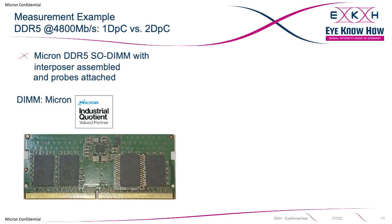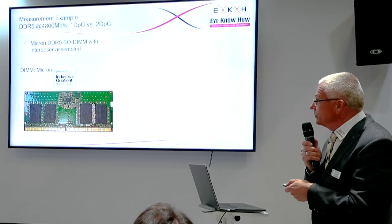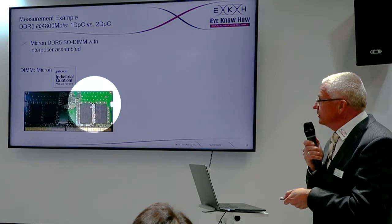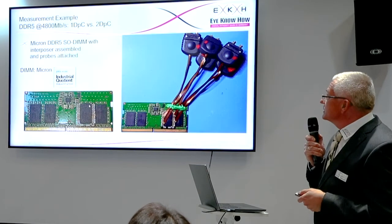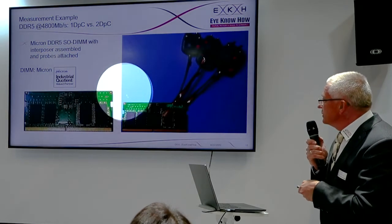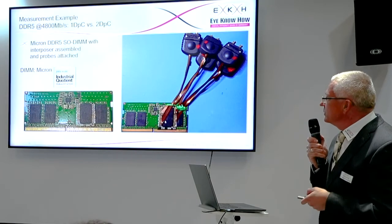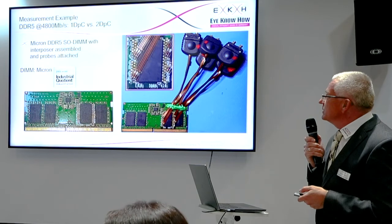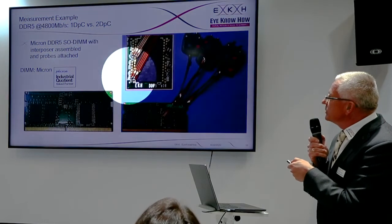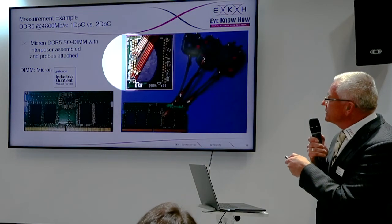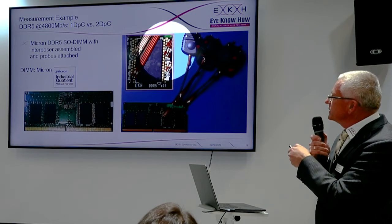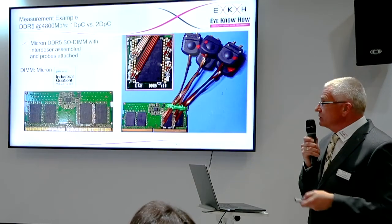To show that this is not just simulation artifacts, here are actual measurements. In this case we have a Micron DIMM with an interposer mounted on it. You can see the setup: the interposer, the DIMM with the interposer, and the probe soldered to it. A closer view shows the probe soldering on the interposer with all the signal pads where you can connect to the signals, and the measurement looks like this.